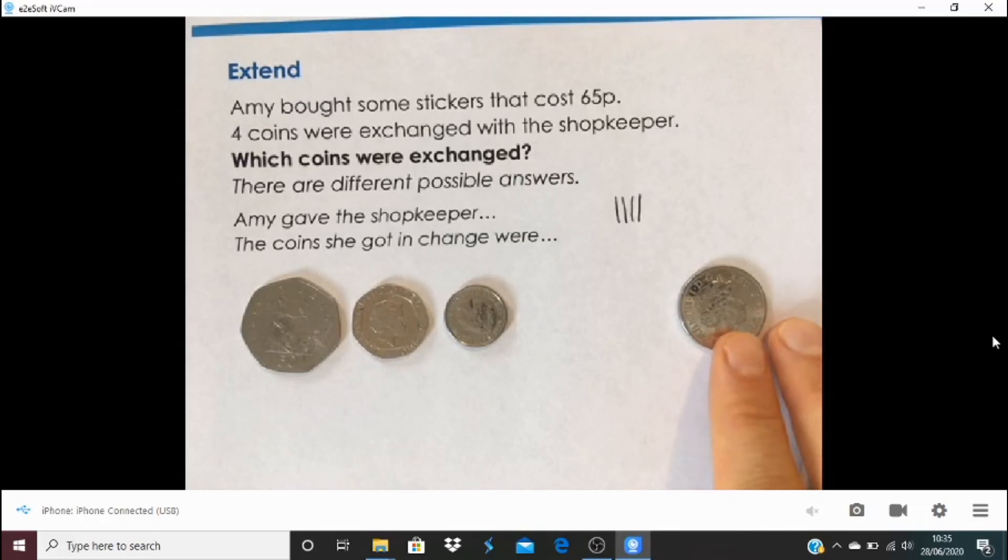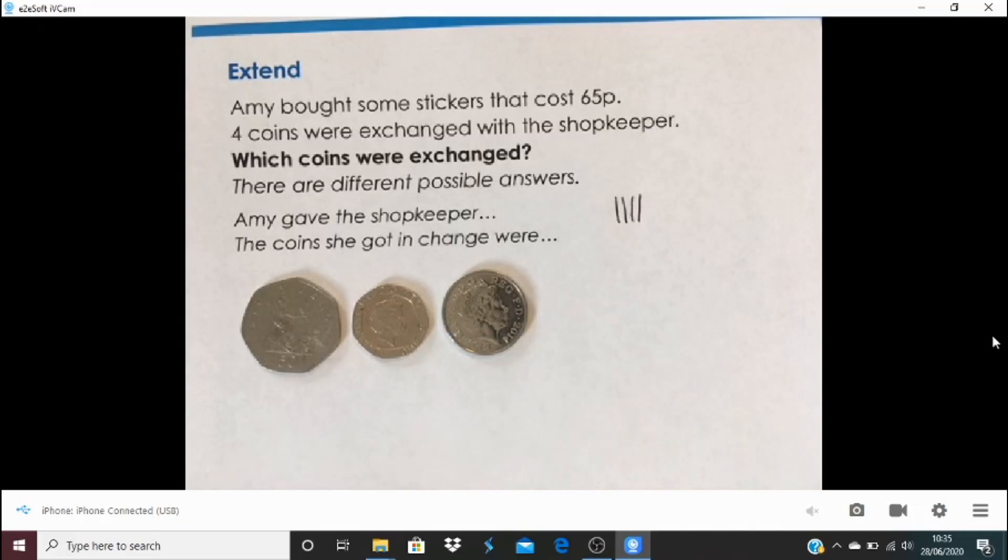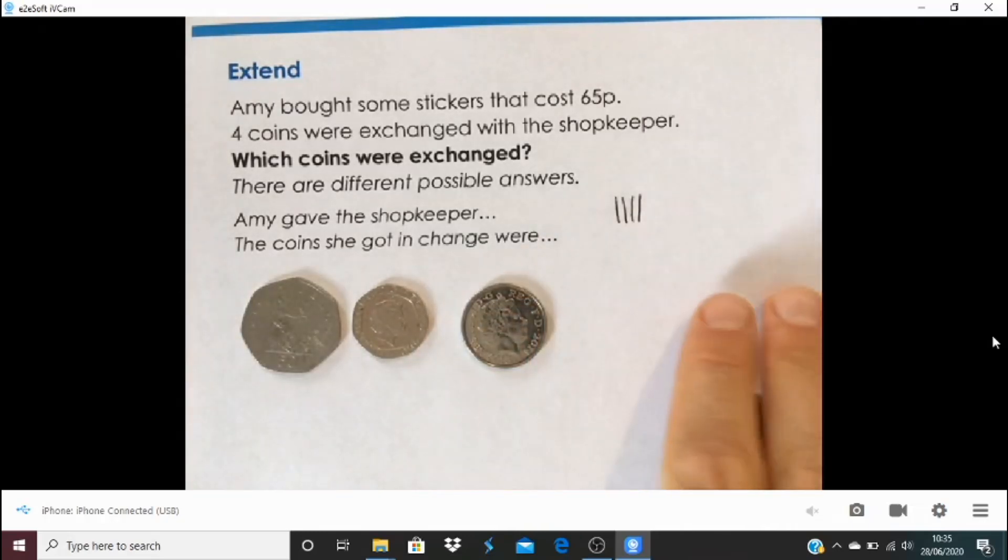Now if I'm thinking about other ways where I could get change, so I could go from 75p and let's say I could think well 80p, but then I can't give, I would be owed 15p change and with one more coin that's not possible.